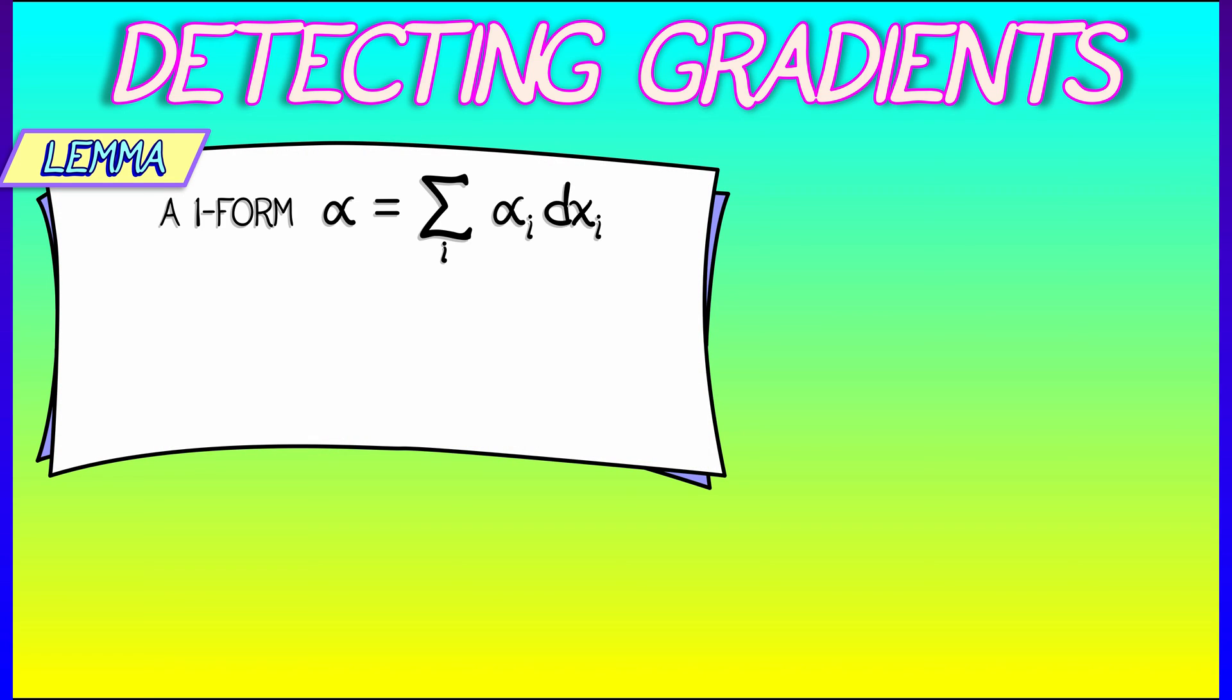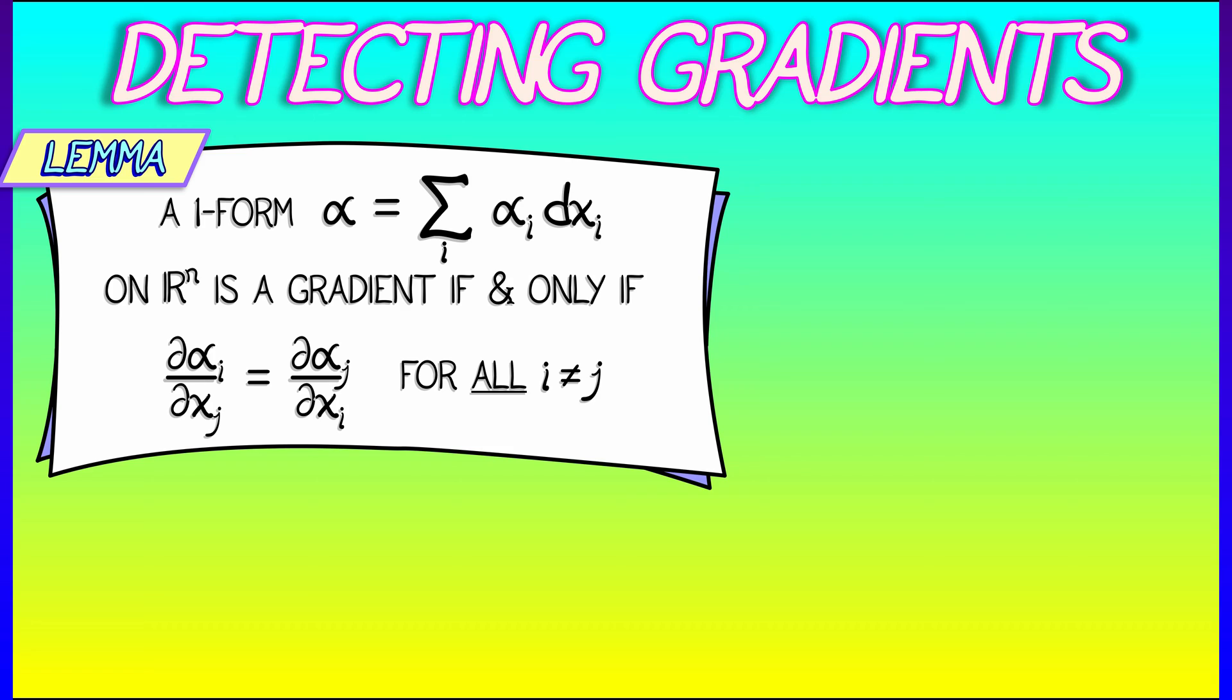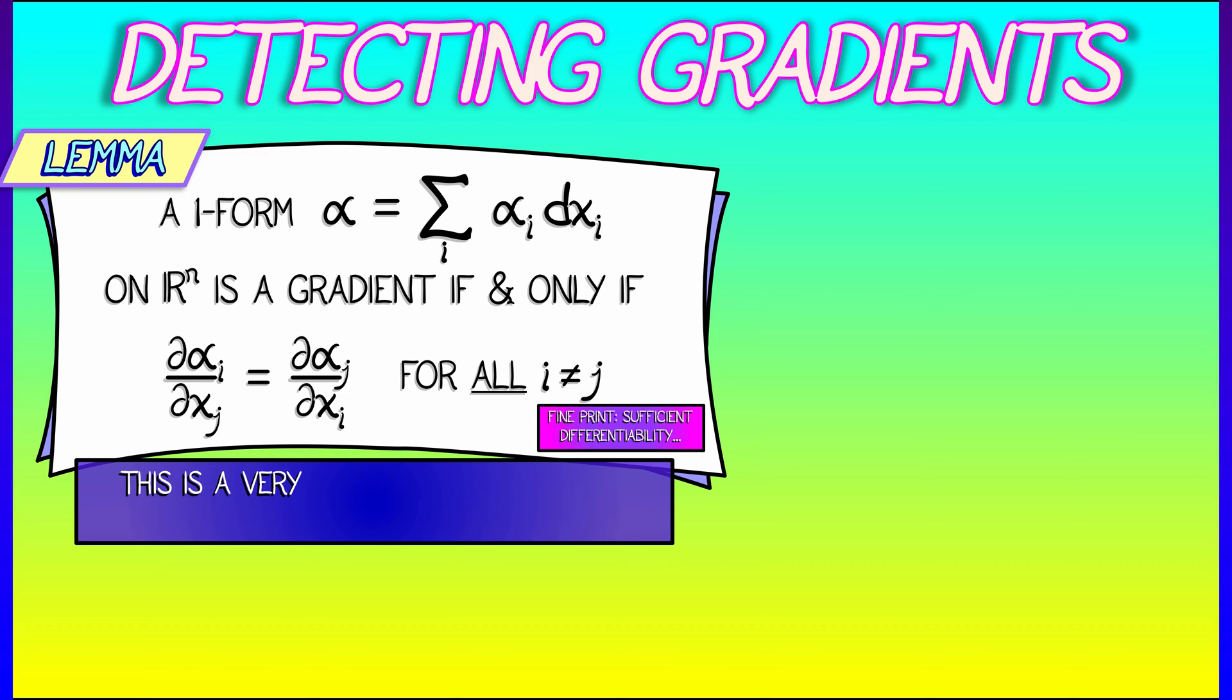Let's say that we've got a one form on R^n, and it is alpha, and it has components alpha_i dx_i for some functions alpha_i, 1 to n. This one form on R^n is a gradient if and only if the following holds: We take the partial of alpha_i with respect to x_j. That has to be equal to the partial of alpha_j with respect to x_i for all i and j. You check all these partial derivatives, and assuming sufficient differentiability on all of R^n, then boom, you've got a gradient.